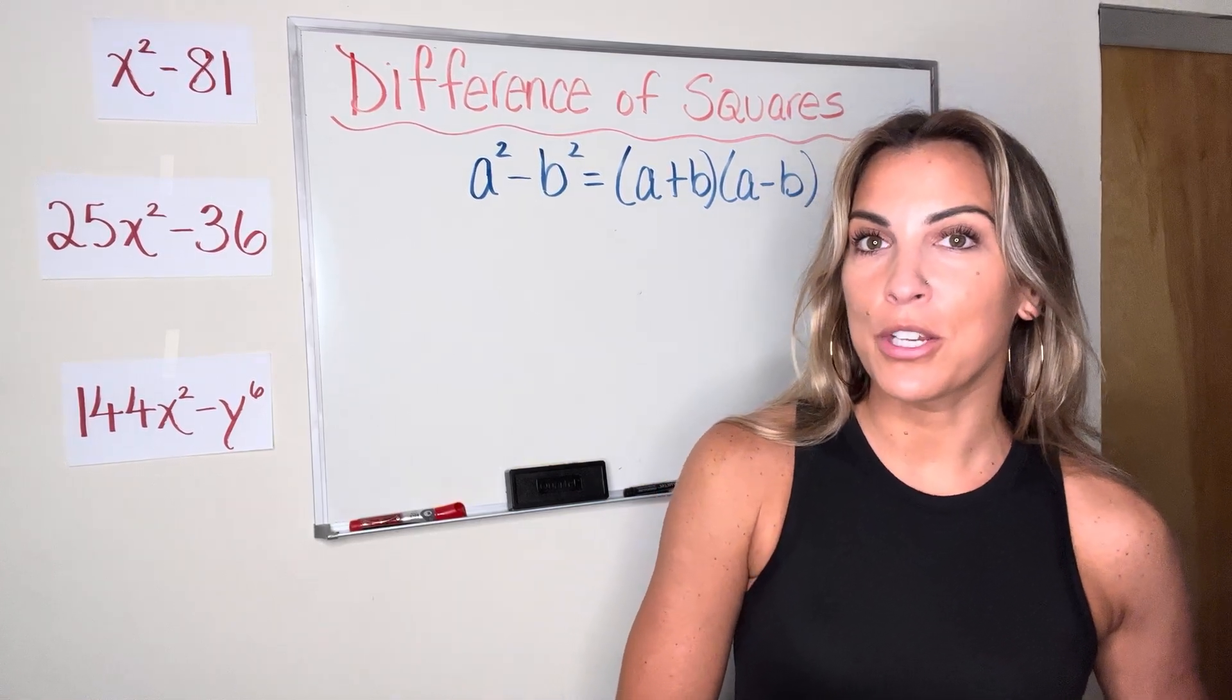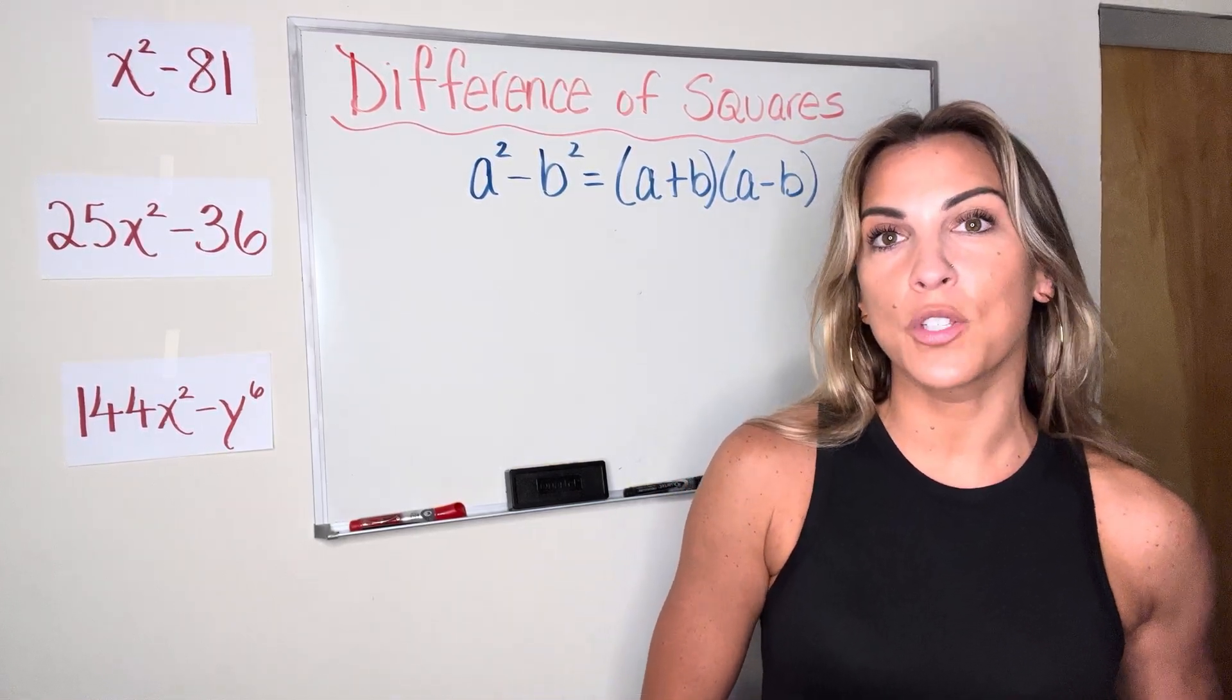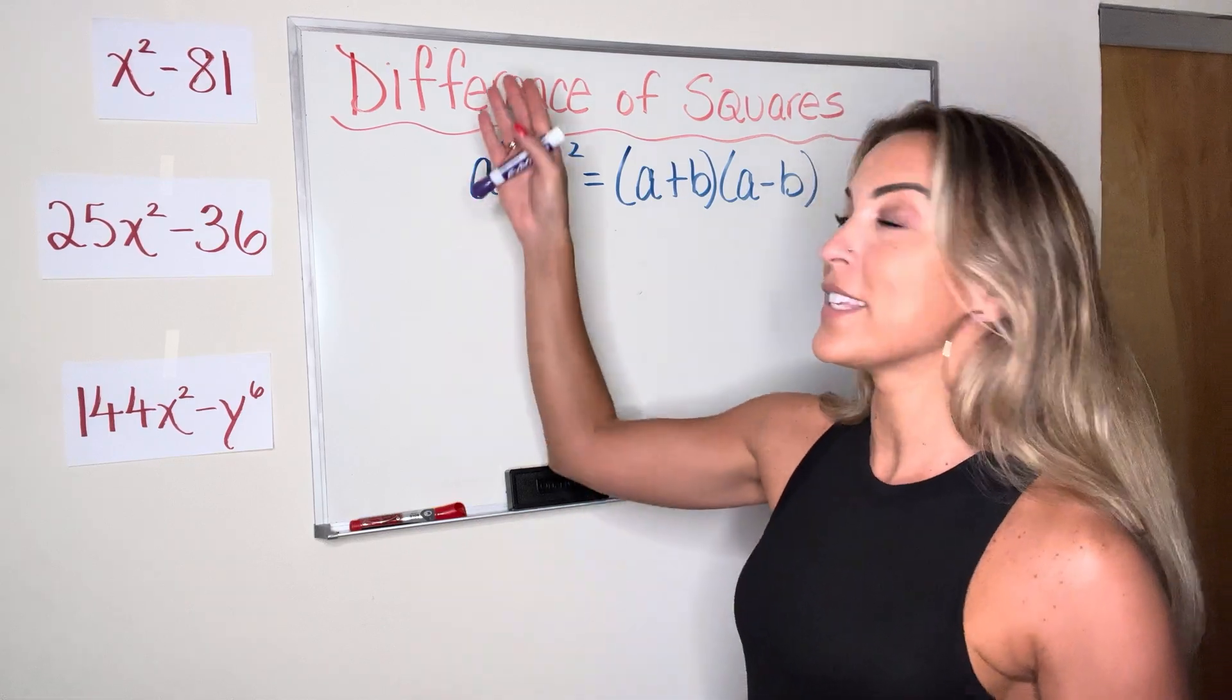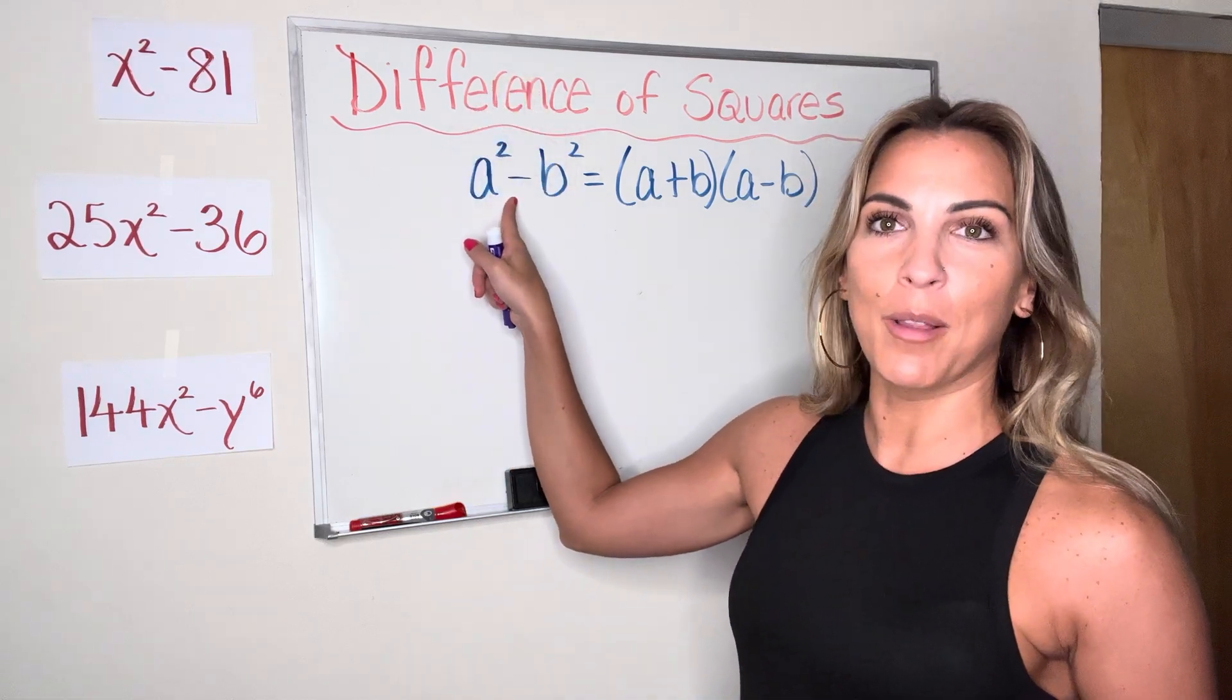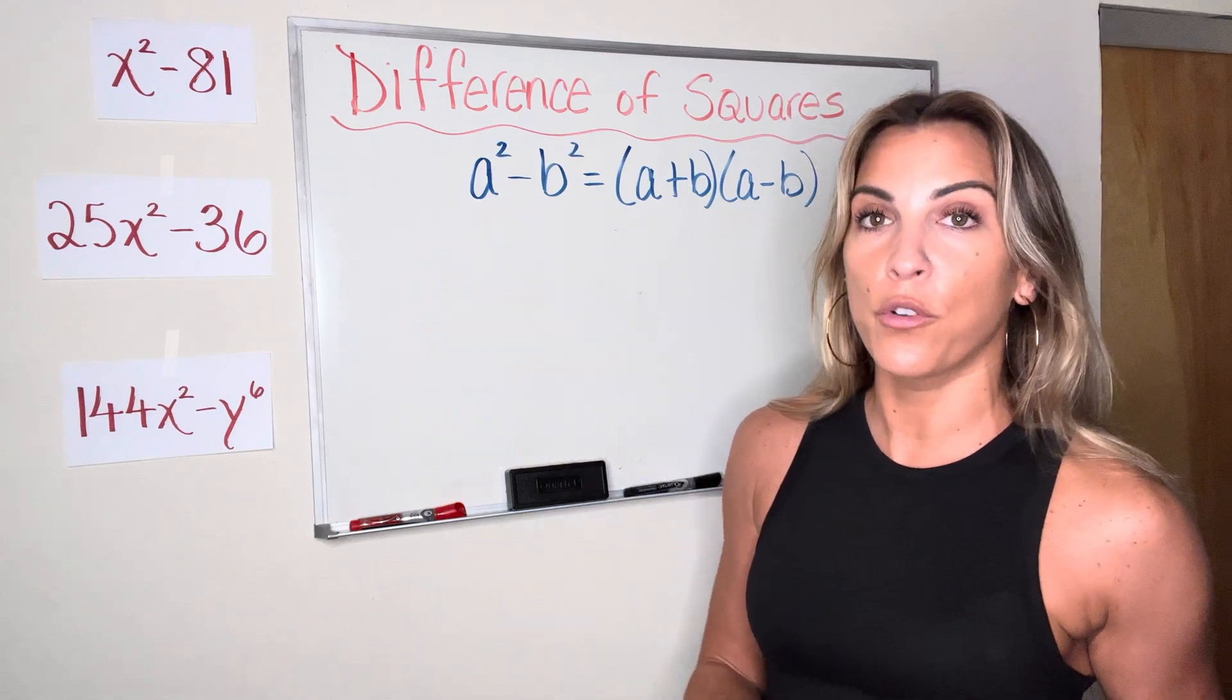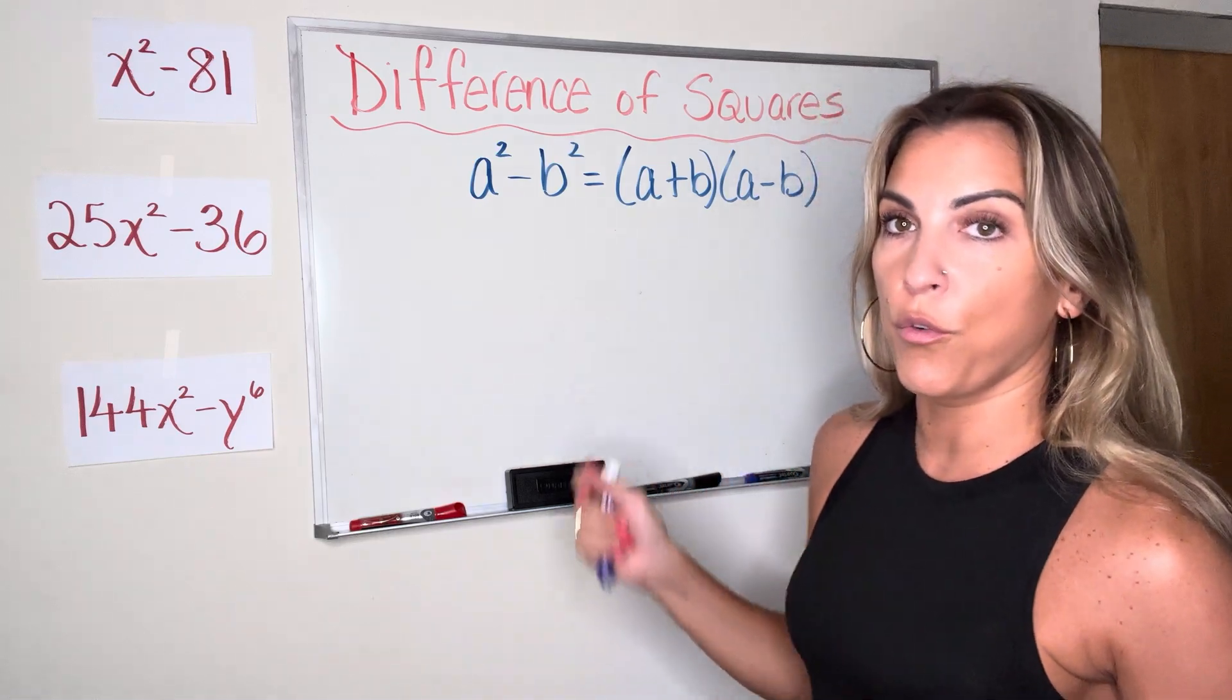We are going to factor expressions today by using the difference of squares formula. So the difference of squares method can be used when there is a difference, so a subtraction problem, of two squares, two expressions that are being squared. So first and foremost, we need to know the formula.